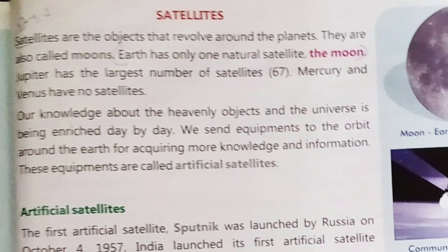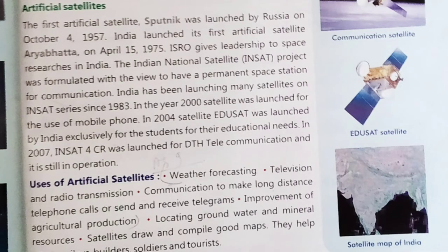Our knowledge about heavenly objects and the universe is being enriched day by day. We send equipment to orbit around the earth for acquiring more knowledge and information. These equipments are called artificial satellites. The first artificial satellite, Sputnik, was launched by Russia on October 4, 1957. India launched its first artificial satellite, Aryabhat, on April 15, 1975.